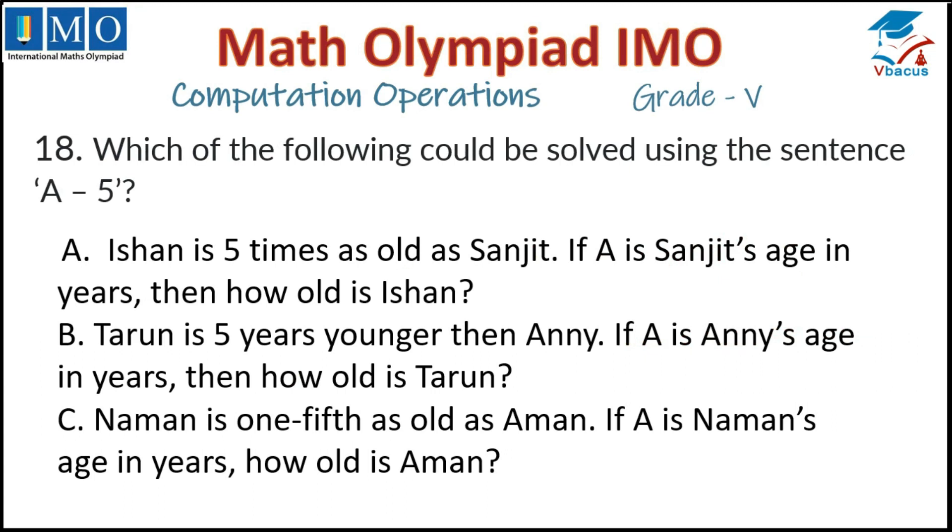Question number 18: Which of the following could be solved using the sentence A minus 5? Option A: Ishan is five times as old as Sanjit. If A is Sanjit's age in years, five times means we have to multiply, so that option is wrong. Option B: Tarun is five years younger than Anny. If A is Anny's age in years, then how old is Tarun? Here we can apply A minus 5. So option B is correct.